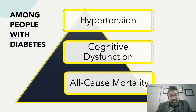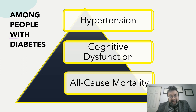Among people with diabetes, I looked at cognitive dysfunction. So among these individuals, when hypertension was introduced, there were higher levels of cognitive dysfunction. This is all happening among people with diabetes, and sometimes that distinction can be confusing.